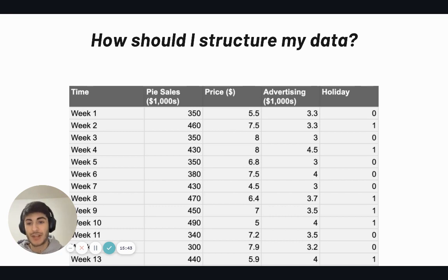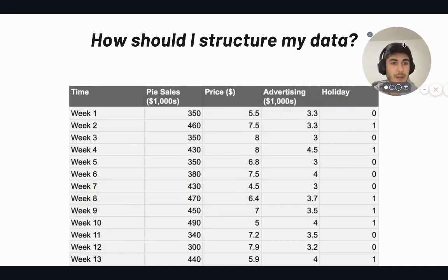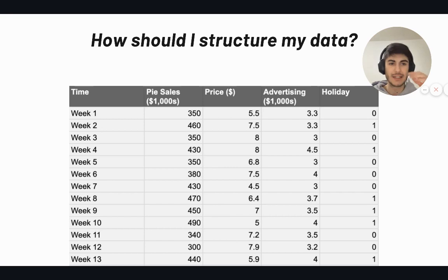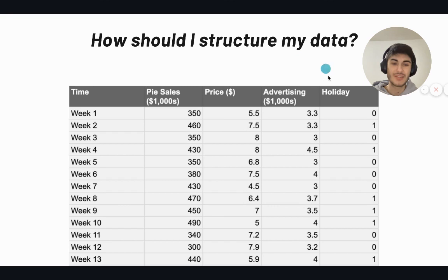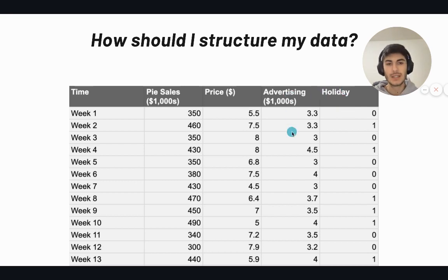For structuring data, I have a simple framework: in the first column you include the time variable — daily, monthly, or weekly — where each row represents the aggregated data for that particular time frame. The second column is the output variable, representing sales or conversions. The rest of the columns are input variables — price, advertising spend, holidays, seasonality, and so on.